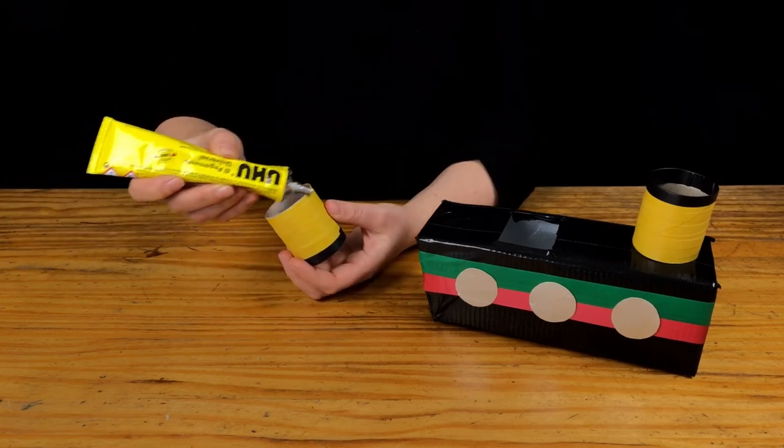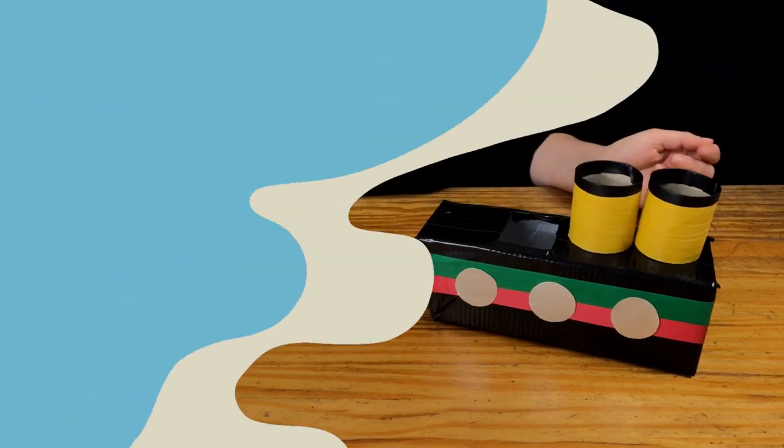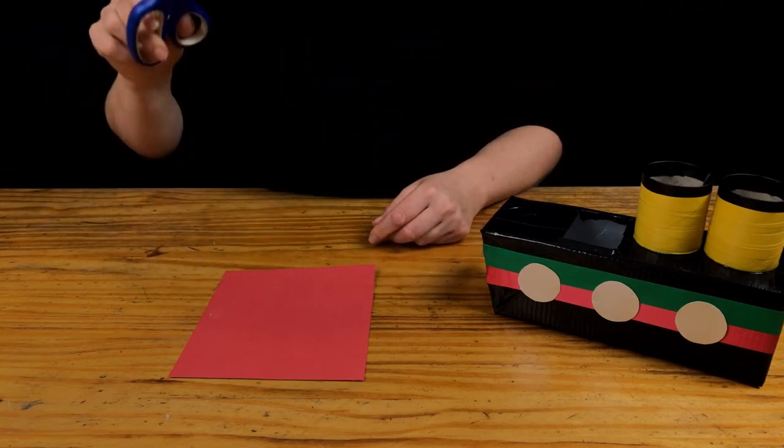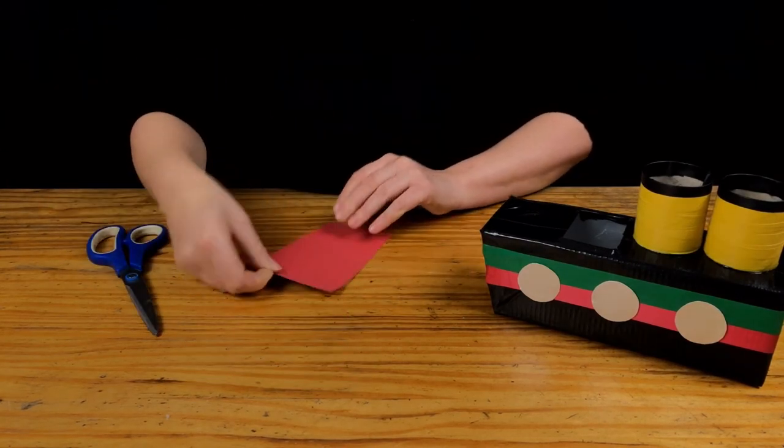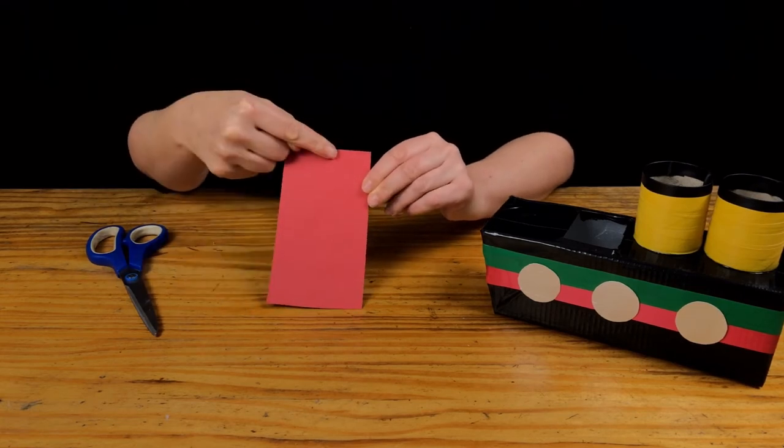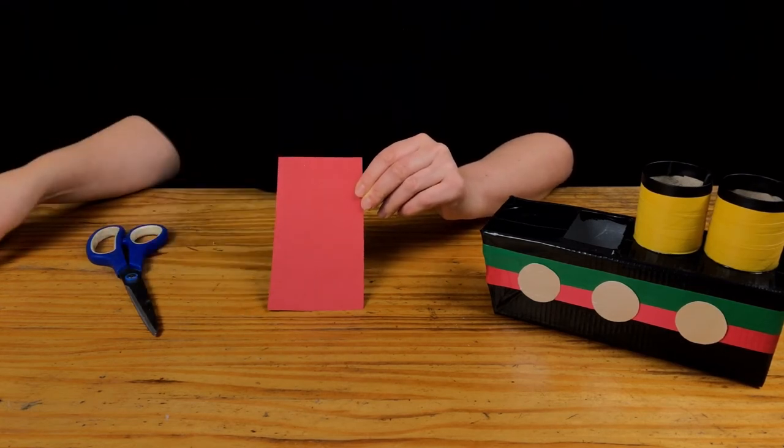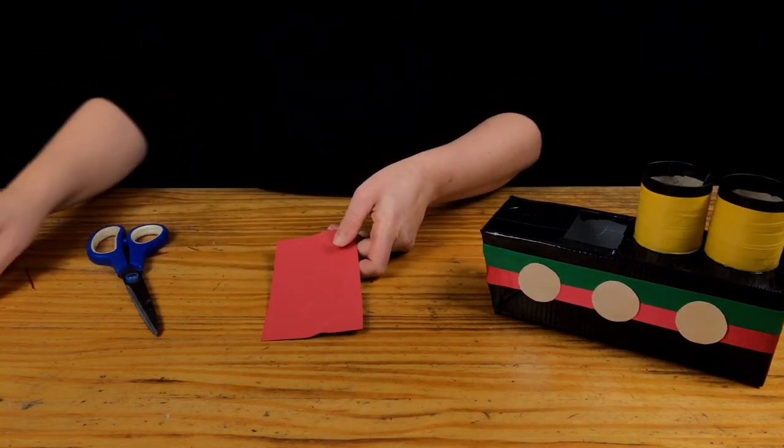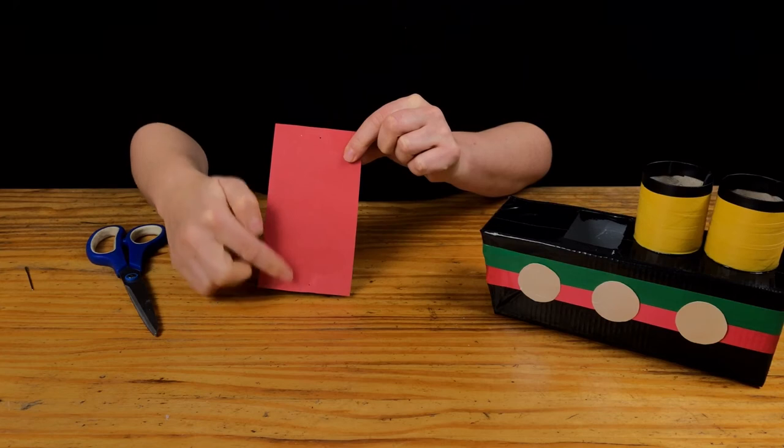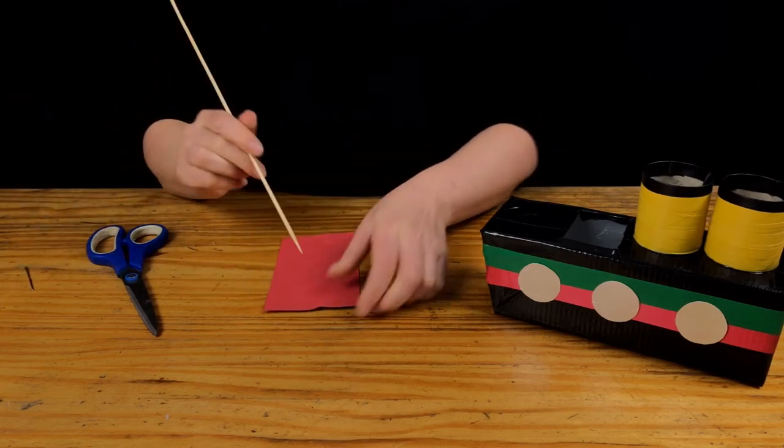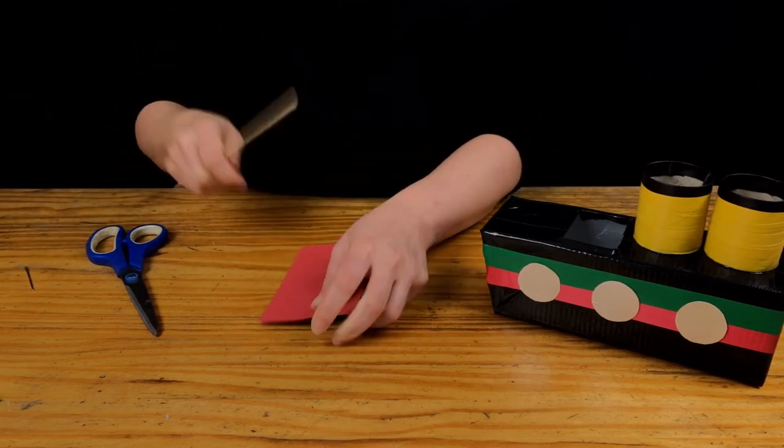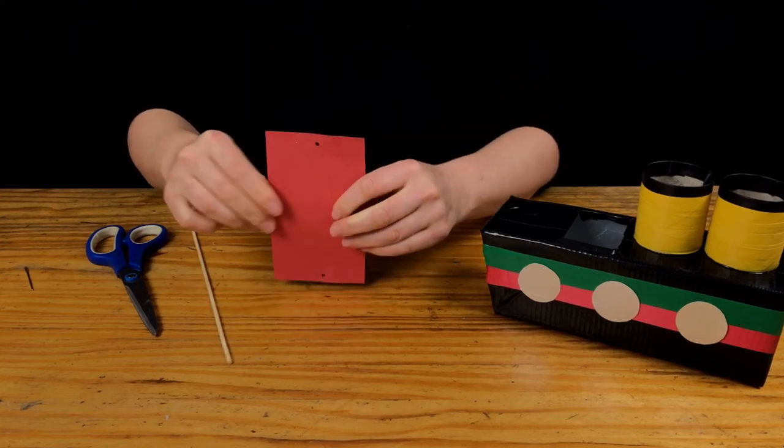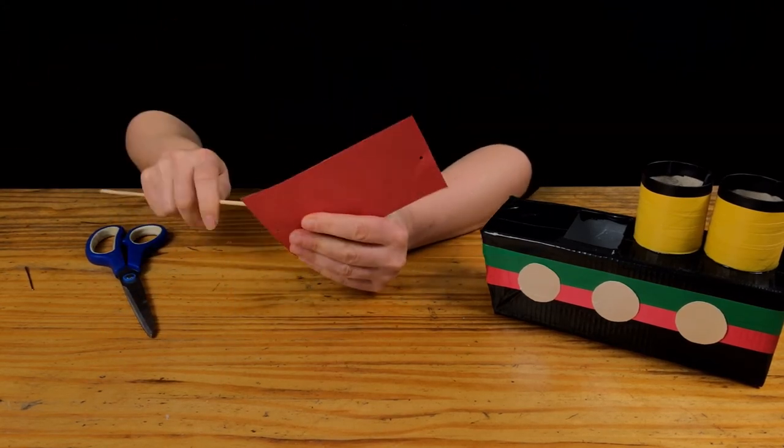It's starting to look ship shape. To make the sail, cut out a rectangle of coloured card. Make a small hole at the top and bottom of the sail using the darning needle. Then make the holes bigger using a bamboo skewer. Insert the bamboo skewer through the sail holes.